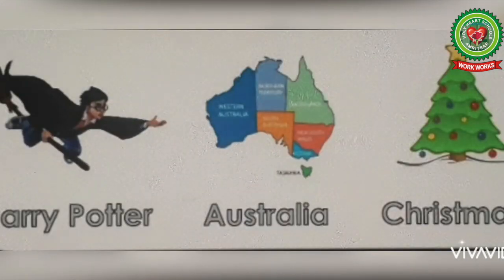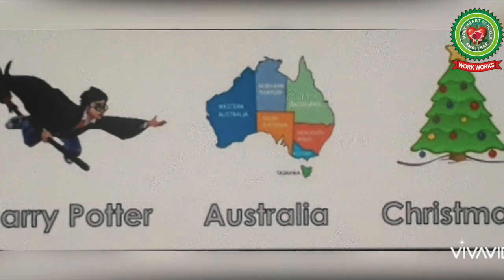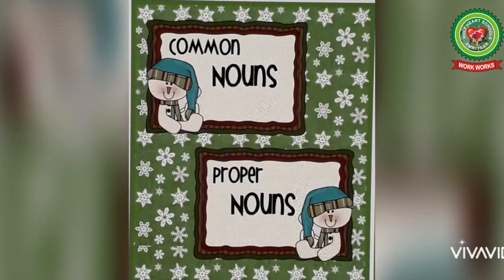Let us discuss some examples of proper noun. First is Harry Potter — Harry Potter is the name of a specific person, so it is a proper noun. Number two, Australia — Australia is the name of a specific place, so it is a proper noun. Number three, Christmas — Christmas is the name of a specific festival, so it is a proper noun.